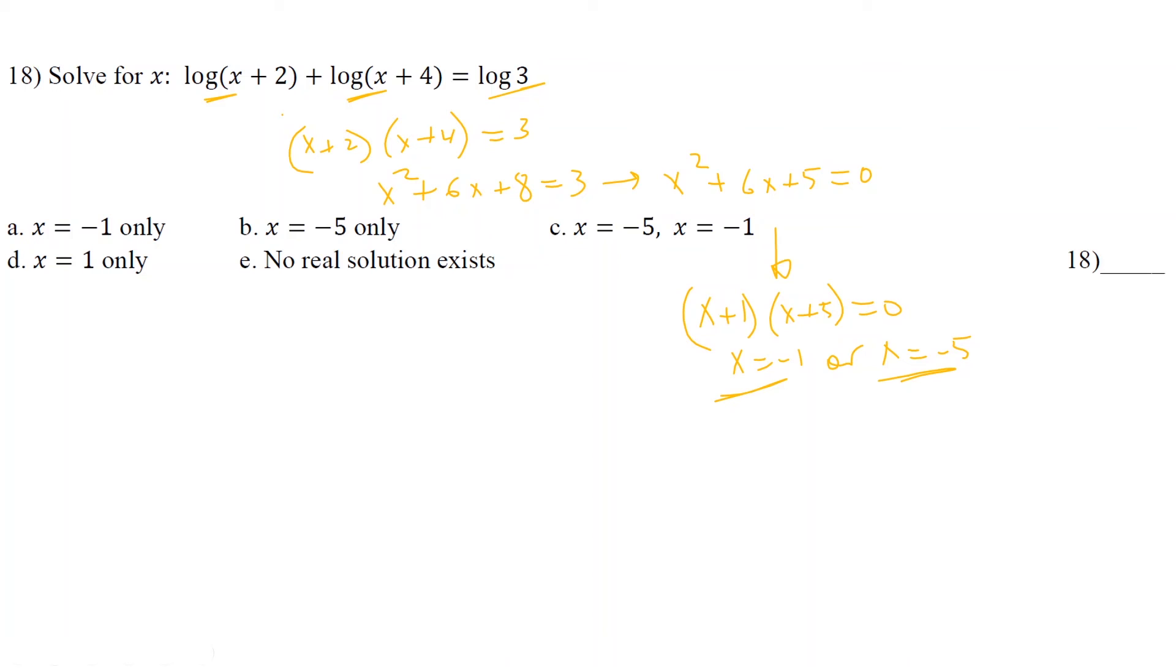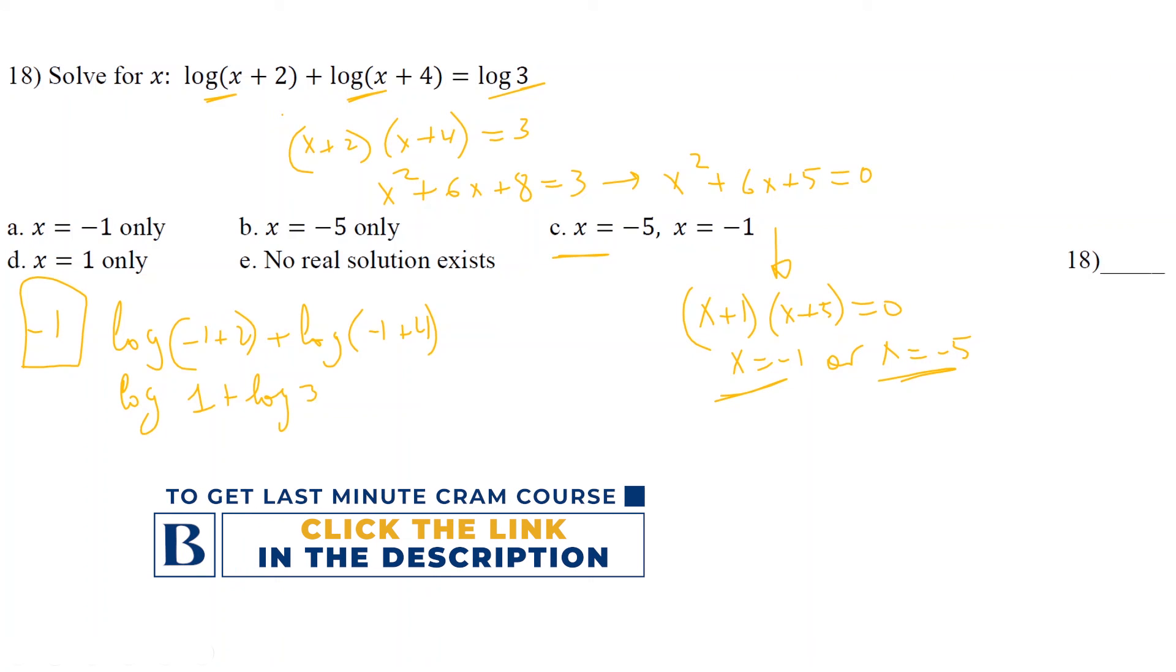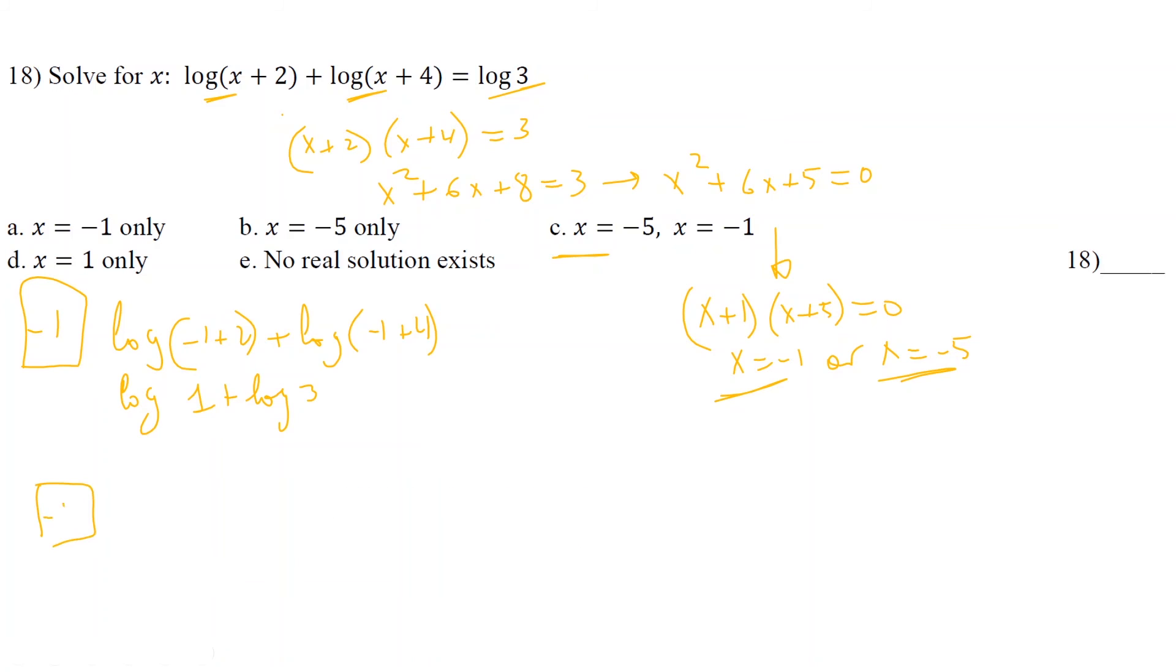So for the negative 1 first. Log of negative 1 plus 2 plus log of negative 1 plus 4. This equals log of 1 plus log of 3. So far, so good. Chance that is the right answer. What about negative 5? Log of negative 5 plus 2 plus log of negative 5 plus 4. Now, let me simplify it. So it's log of negative 3. Here it's plus log of negative 1.